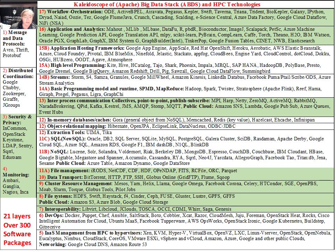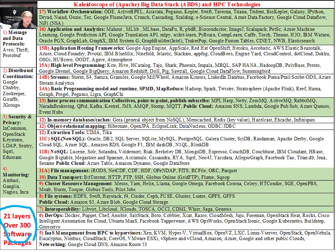We remind ourselves of the more than 300 software packages. When we first started, there were just 40 or 45 of them, so we've come a long way. Some of these are not as important as others, but looking at this list tells you what you might be missing. It tells you about software packages like Cylndra, Accumulo, Google Prediction API, and FlumeJava, which you may or may not know. It also tells you about the layers 1, 2, 5 through 17 — the 21 layers.